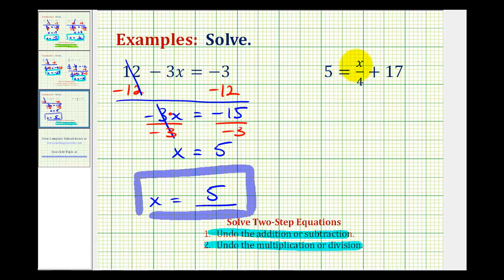Looking at our second example, notice how the variable is now on the right side. So we want to manipulate the equation so it's in the form of some number equals x. So we don't want this 17 here or this four here. And the first step is to undo this addition here, so we'll subtract 17 on both sides of the equation.